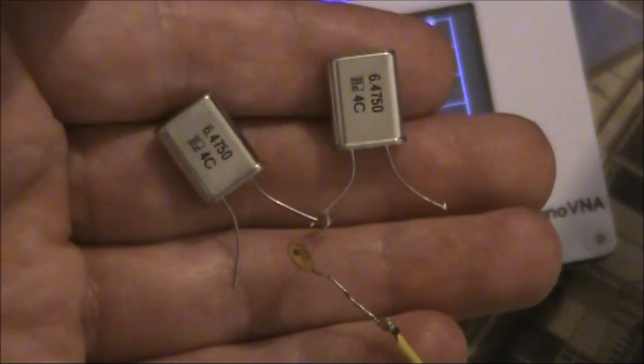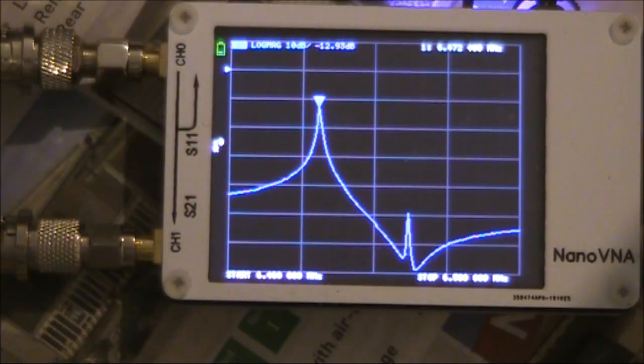This is about the simplest crystal filter you can get. What you are seeing here is two crystals in series. I haven't yet connected the ground. Therefore the disk ceramic capacitor is floating.